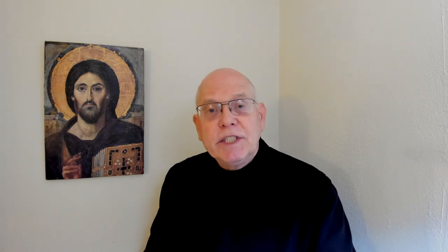We began in session one by looking at the structure of John's gospel. The most commonly accepted structure is a four-part structure, beginning with the prologue in the first 18 verses of chapter one. In the prologue, John reveals his understanding of who Jesus is and of the divine plan of which Jesus is a part. Then we move on to a larger section from chapter one verse 19 through the end of chapter 12, referred to as the Book of Signs. It contains Jesus's teaching and several of his miracles, called signs because they indicate something about Jesus's mission and who he is.